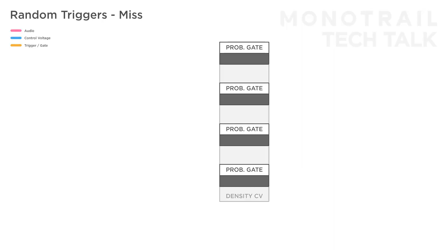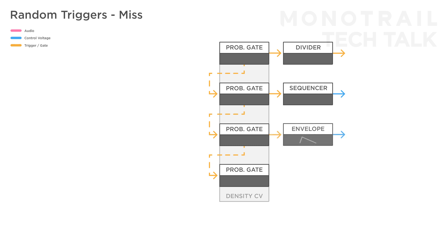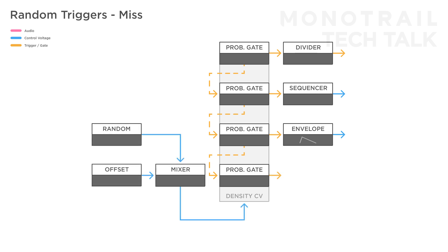The built-in random pulse generator and reset input add additional functionality to the module. Random triggers can be used on all sorts of things within a modular system. Only the first channel generates random pulses, but because of the normalization, you still get four different patterns. You can use them as a random clock, to start and stop sequences, or to trigger envelopes and create subtle modulation in an ambient patch. Sending a slow random voltage to the density input and manually switching between miss and match settings can create interesting variations.